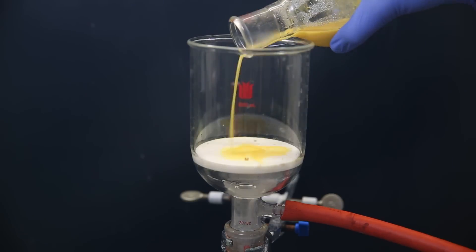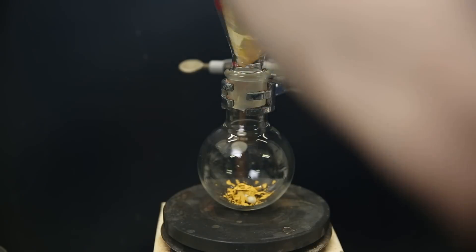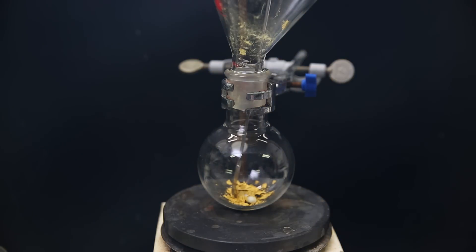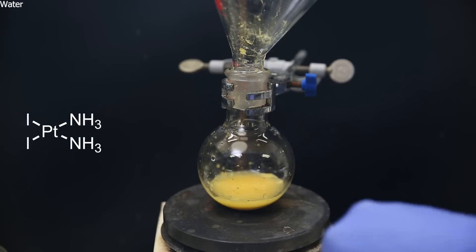I then filter it all through a glass frit with a filter paper on top. And I wash it with some water and then with some methanol. I scrape it off and put it in a new flask. I then add some water to suspend the solid and wash it off the spatula.